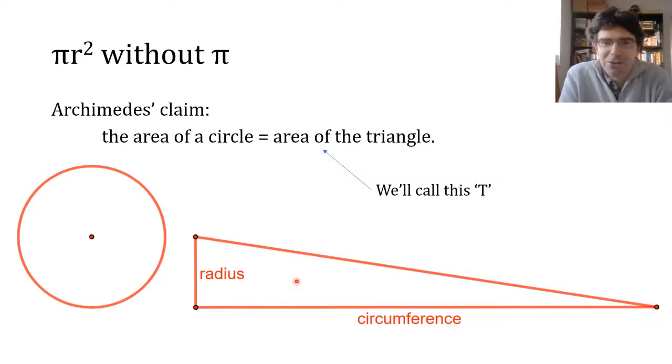Archimedes' proof is then a sort of classic Archimedes. We're going to sandwich the circle between an inscribed polygon and a circumscribed one, and measure their areas and show that we can make each of them get as close as you like to T, both from below and from above.